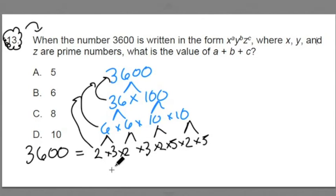When writing out a number in prime factorization form, we always start with the smallest prime number. So here, the smallest prime number is 2, and I've got 1, 2, 3, 4 twos.